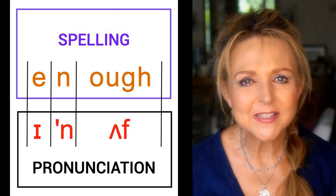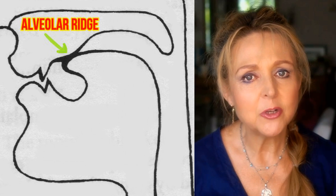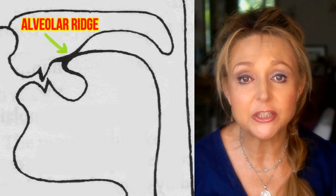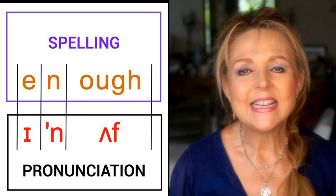Next is 'enough.' The UFF sound is a combination of the short vowel A and the unvoiced F. For F, press your bottom lip lightly against the edge of your top front teeth — remember it's unvoiced. Now say UFF. For N, obstruct the airflow by placing the blade of your tongue on the alveolar ridge just behind the top front teeth. Put it all together with the letter E pronounced as I: 'enough.'